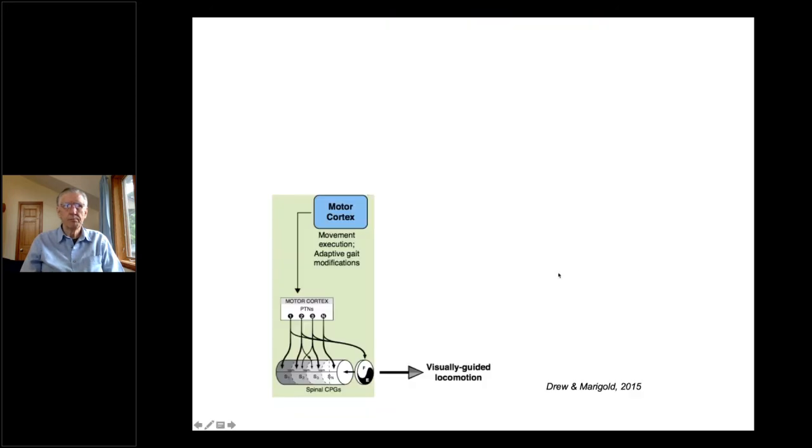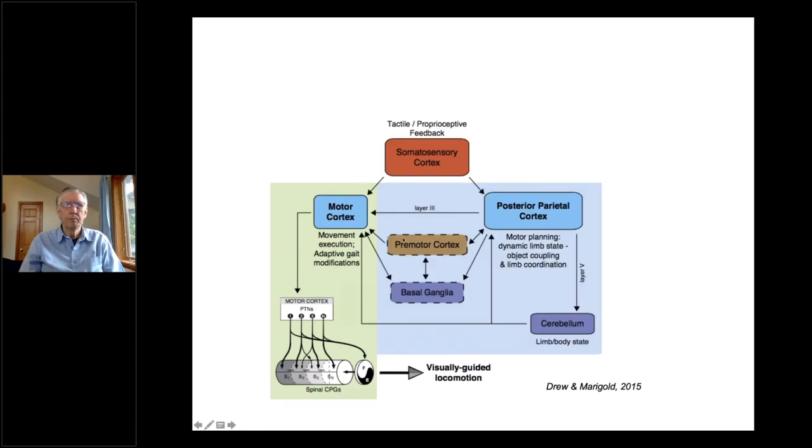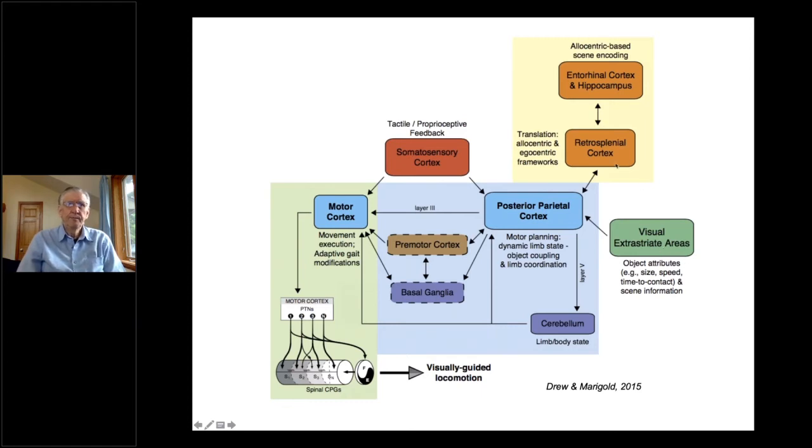I already outlined what we were potentially expecting from posterior parietal cortex. Now based on a theoretical model, again from Drew and Marigold, we would also expect the involvement of motor cortex. If a cat or a human is going to see an obstacle, the motor cortex is going to have to send a signal to the spinal cord and adjust that gait pattern. We're also going to expect somatosensory cortex, posterior parietal, pre-motor, basal ganglia, cerebellum, just to name a few. But you can see what I've circled back on is the involvement of posterior parietal. And then of course, the visual areas, which we had already seen Klaus referred to earlier today. So we now know we're expecting to see some activity in these areas. The question is, can we recover that with scalp EEG?